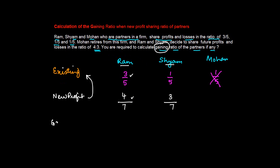So the gaining ratio for Ram equals the new profit sharing ratio minus the old. 35 is the LCM of 7 and 5. 4/7 minus 3/5 equals 20/35 minus 21/35 or minus 1/35. So actually Ram has made a loss.